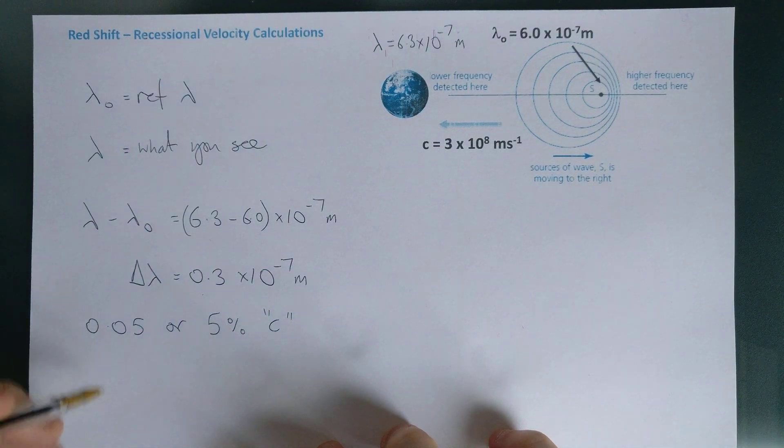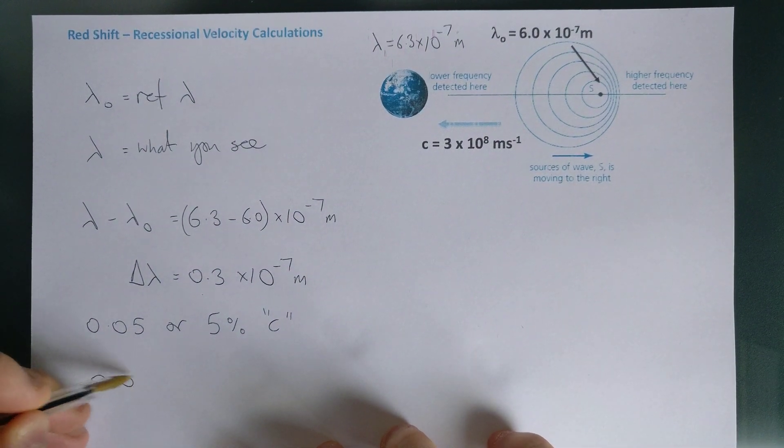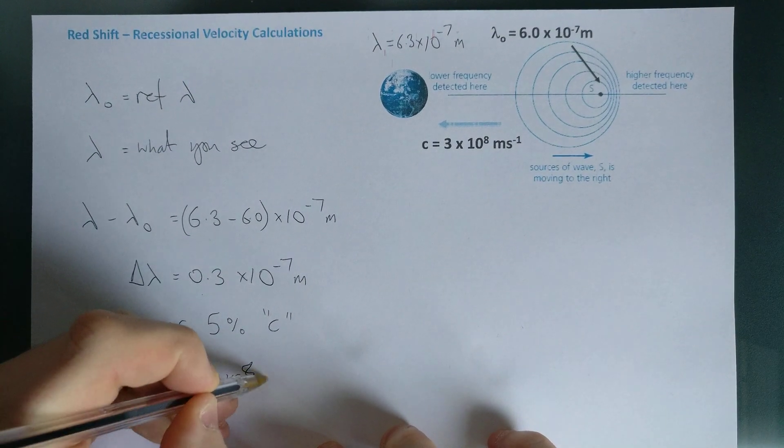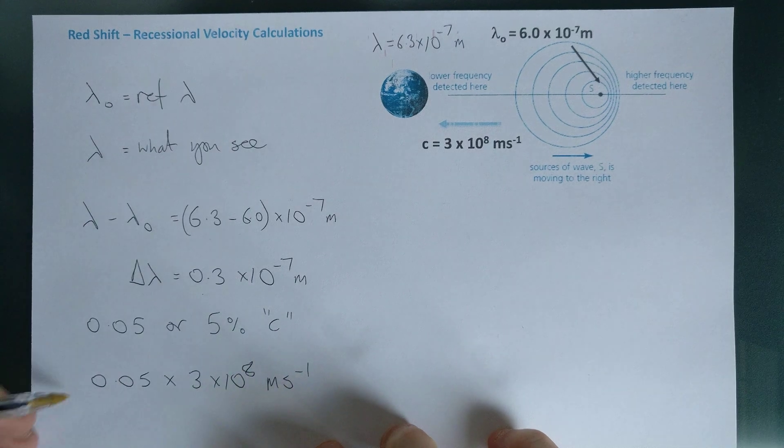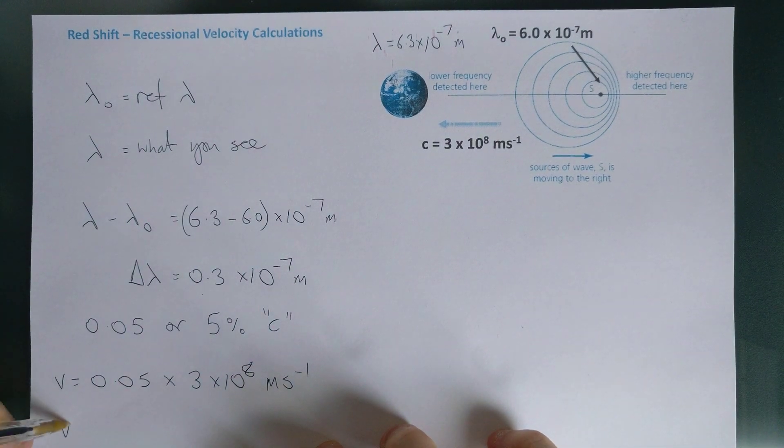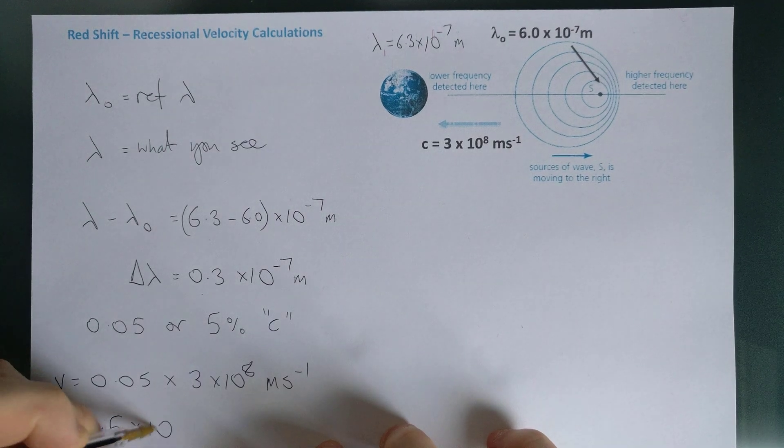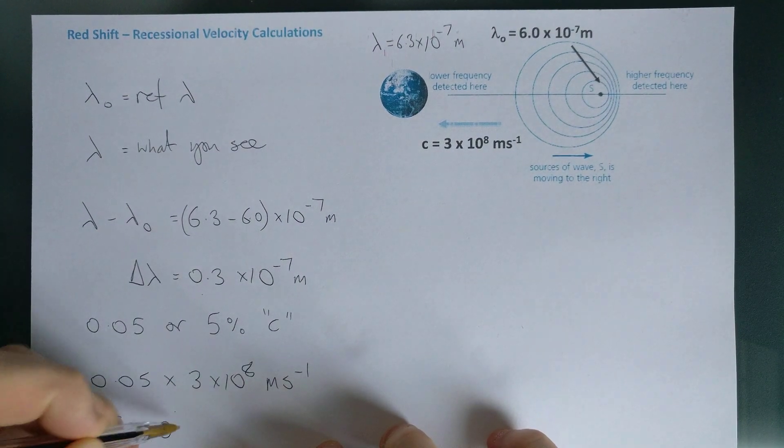And then I could just do 0.05 times 3 times 10 to the 8 meters per second and find out that my recessional velocity, so it's moving away from us at a speed of 1.5 times 10 to the 7 meters per second.